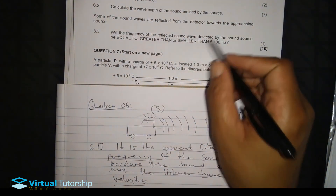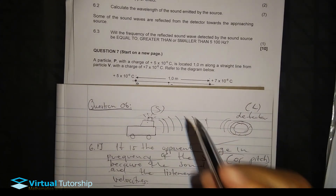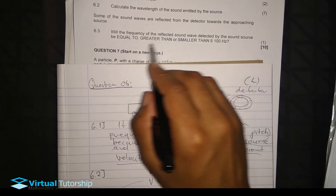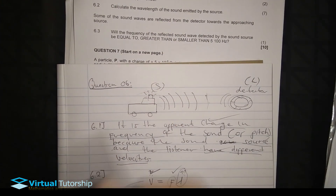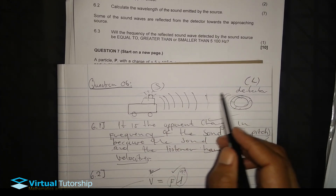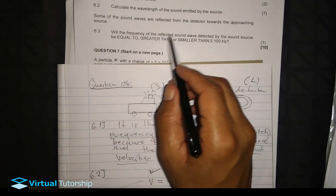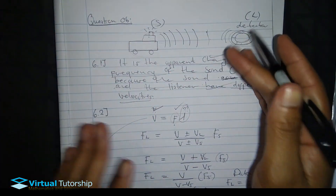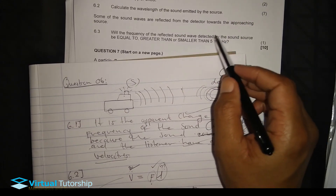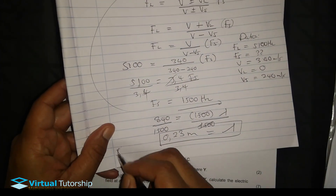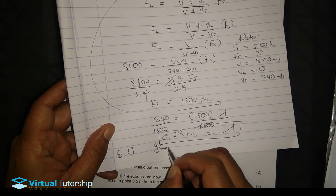Since the sound source is approaching the reflected waves, the frequency detected by the sound source will be higher. The answer to 6.3 is: greater than. The approaching source will detect a higher frequency than 5100 hertz due to the Doppler effect.